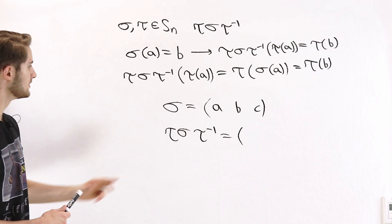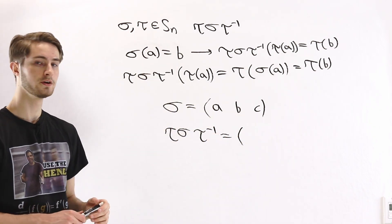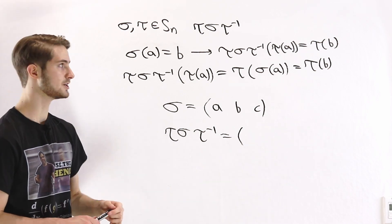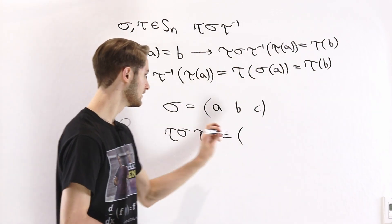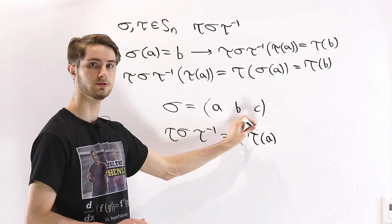What is tau sigma tau inverse going to look like? Well, we know sigma is sending A to B, so sigma of A equals B. We know that that means for the conjugation, tau of A, that's going to be the first element of our cycle, and that's going to go to tau of B.